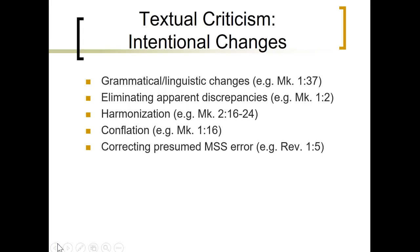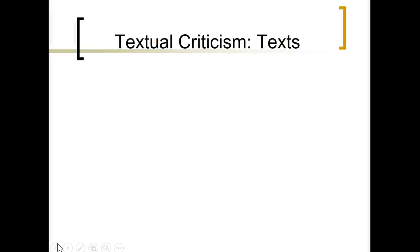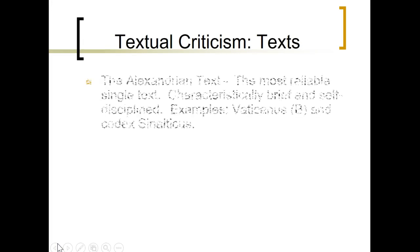Sometimes there is correcting of presumed manuscript error — an example comes from Revelation 1:5, having to do with whether the text concerns blood or another concept, and whether there is an atonement idea in the passage. Sometimes scribes believe they see an error in the text and make changes. There are also doctrinal changes that are made with various intentions.